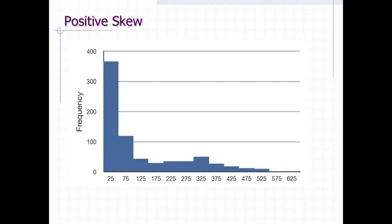This figure shows a distribution with a very large positive skew. Recall that distributions with positive skew have tails that extend to the right.